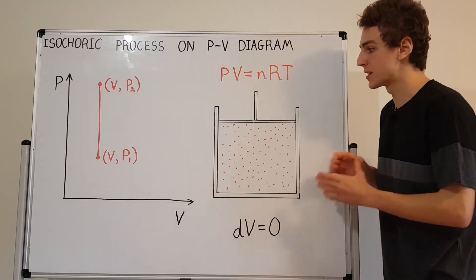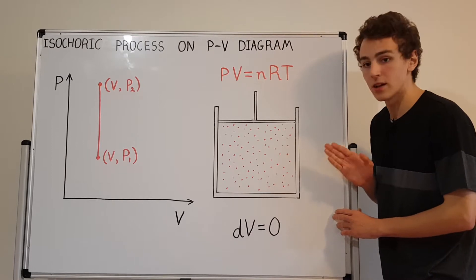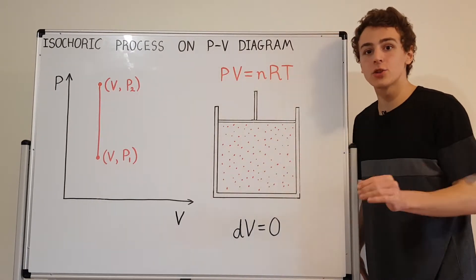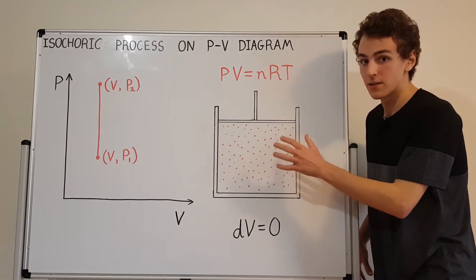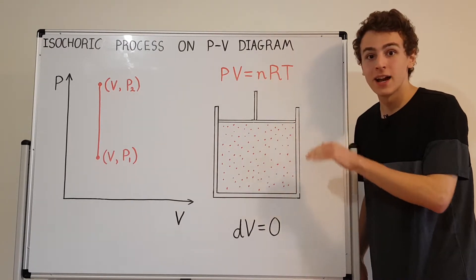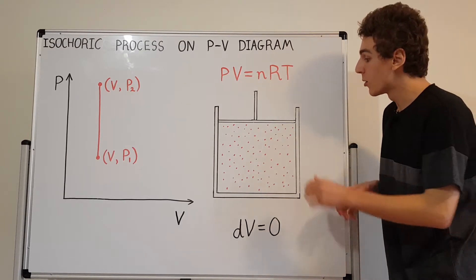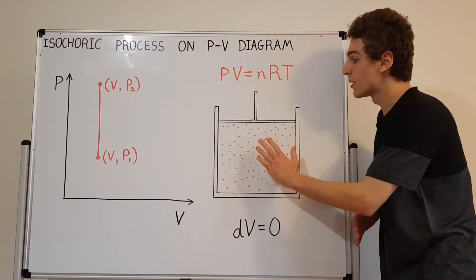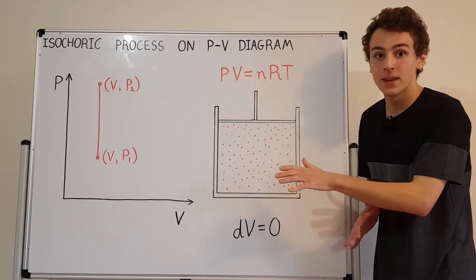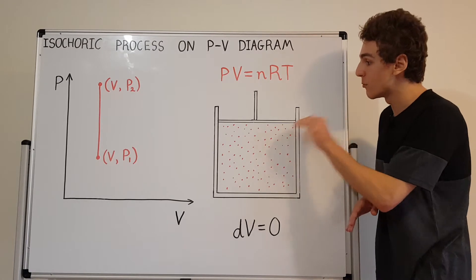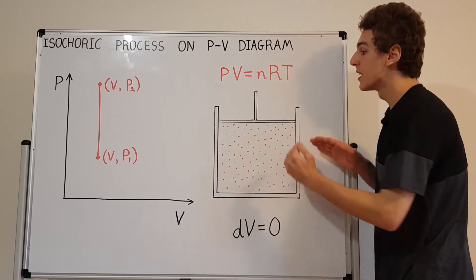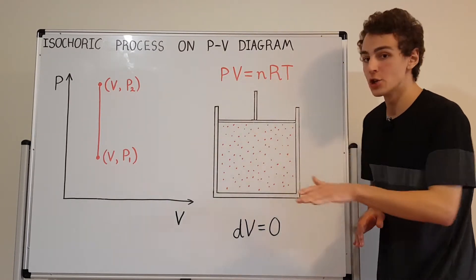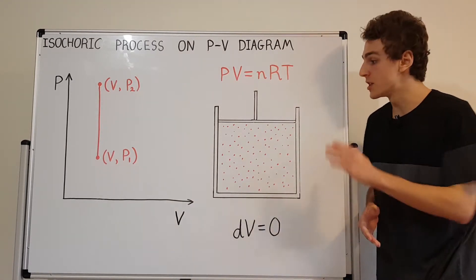So how can we make an isochoric process occur with this apparatus? We have the ideal gas here — it could be compressed or it could expand. We can put a pin in and lock this piston in place, and if we lock that piston in place, we're going to have a constant volume. The only way this volume can change is if the gas pushes the piston up or the piston pushes down on the gas. With a pin or lock mechanism on the piston, this becomes a rigid container that can't change its volume for the entire duration of the process.